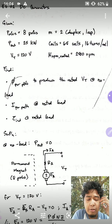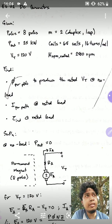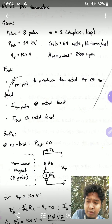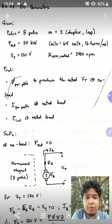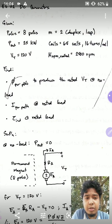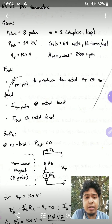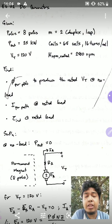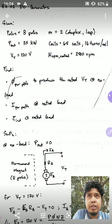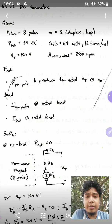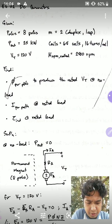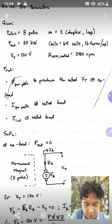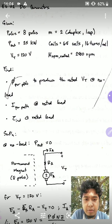What we are asked to find here is the strength of the magnet — the flux per pole — to produce the rated voltage of 120 volts at no load. So we will be producing a no-load voltage of 120 volts.